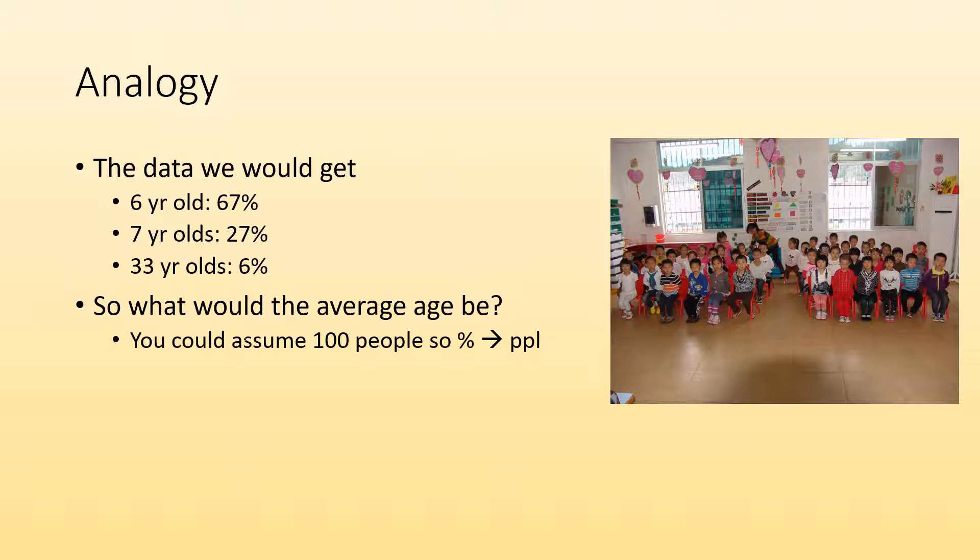Well, if we had the percentages, we could pretend we had 100 and then those percentages just become people. So you're going to do 67% times six years old, 27% times seven years old, and 6% times 33 years old. I'm going to add all those together and then divide by 100 because it's 100%, I assumed I had 100. So those percentages become just number of people. And when I do that, I get 7.89 years old.